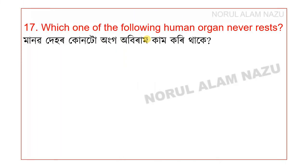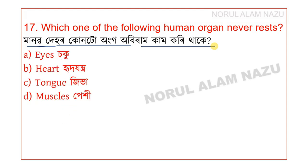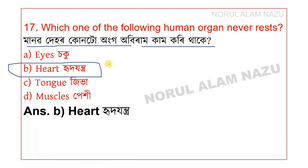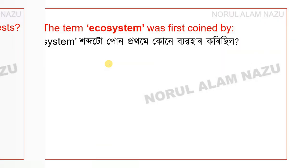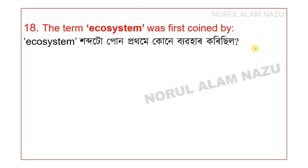Question 17: Which human organ never rests? The options include eyes, hair, tongue, and muscles. The answer is the heart — the heart never rests.